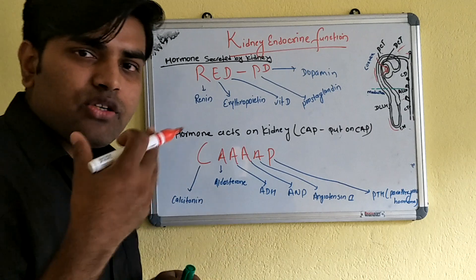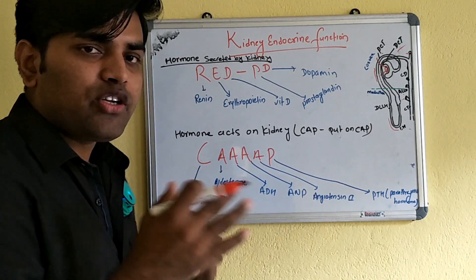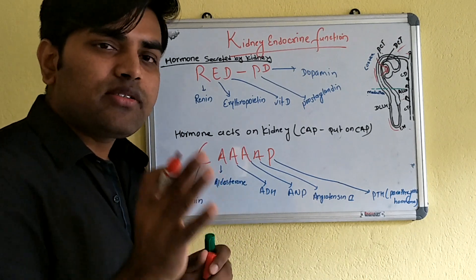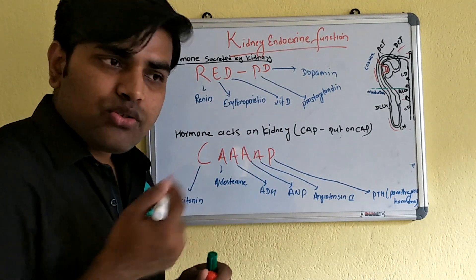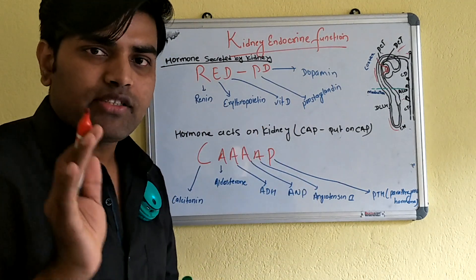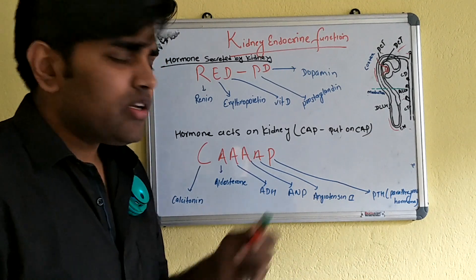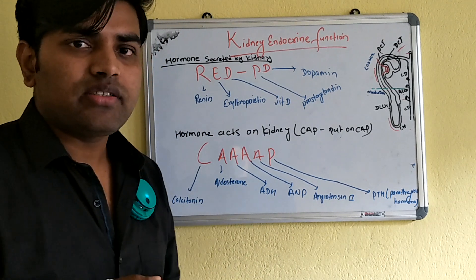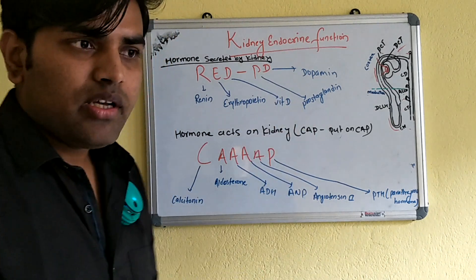Erythropoietin stimulates bone marrow and helps in erythropoiesis — RBC synthesis. Remember that chronic kidney disease patients present with anemia partly due to lack of erythropoietin, so we supplement erythropoietin in these patients. Also important: erythropoietin supplementation may lead to hypertension in chronic kidney disease.